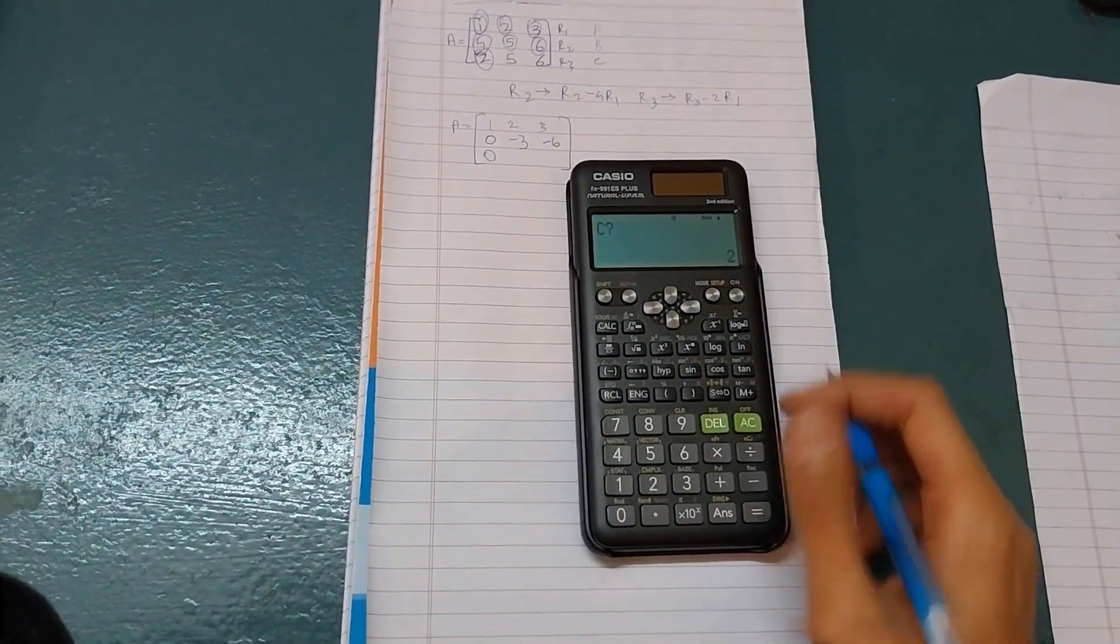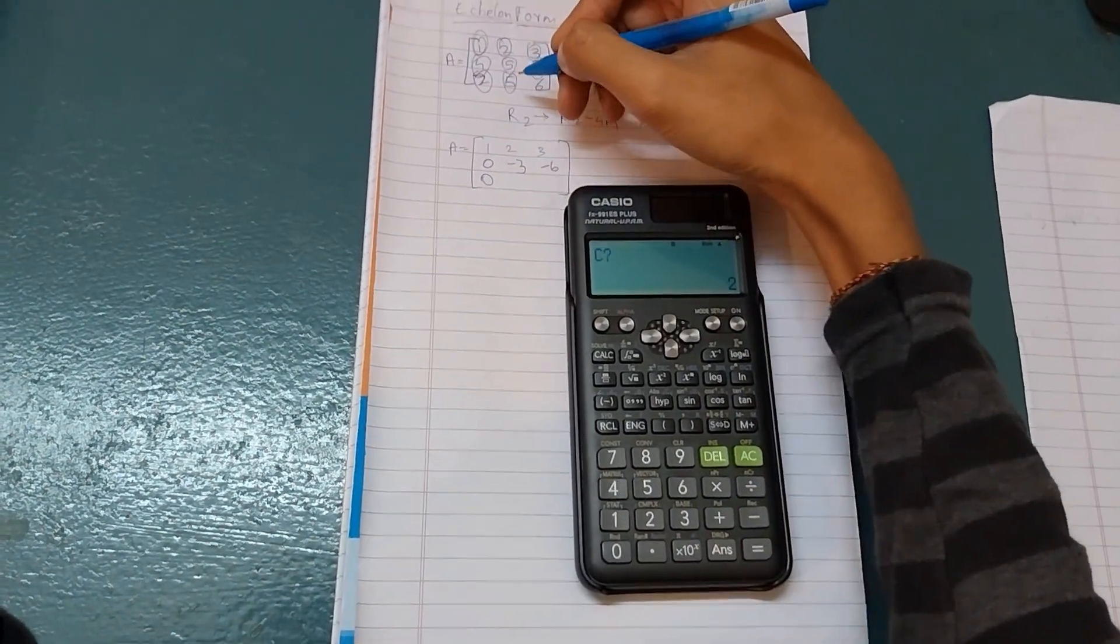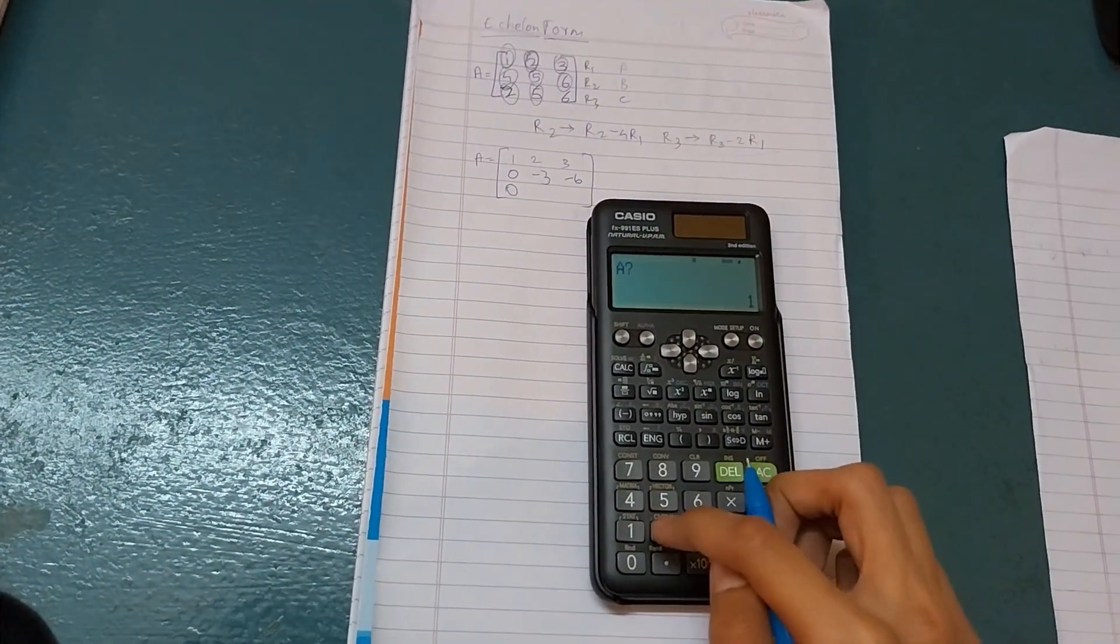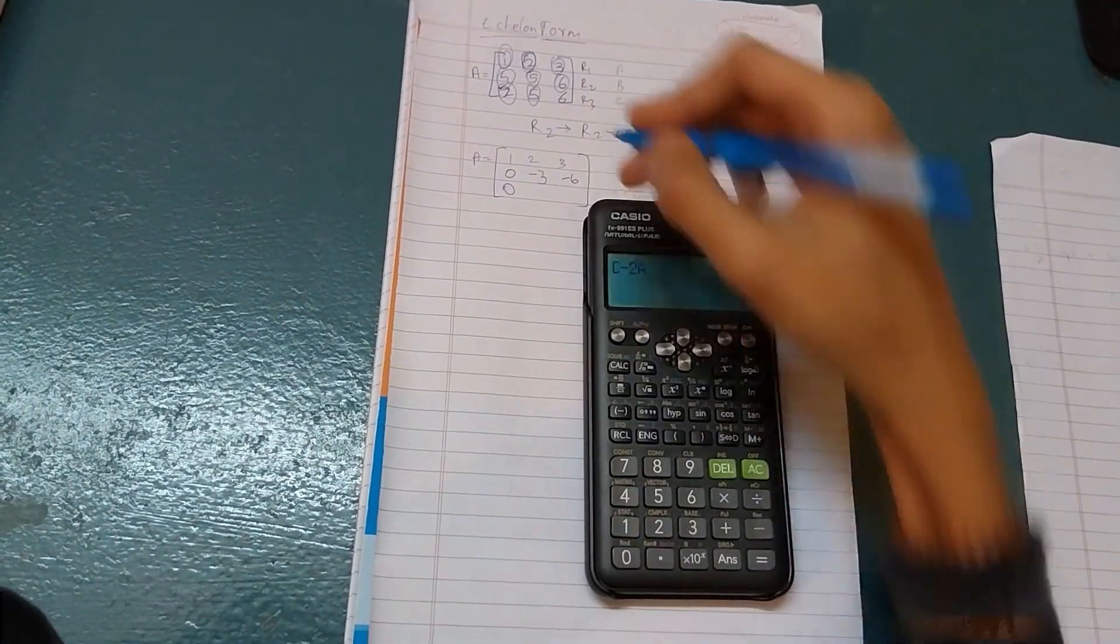Now press equals. C value is 5, so write it as 5. Then A value is 2, so write as 2 and equals. So it is 1.